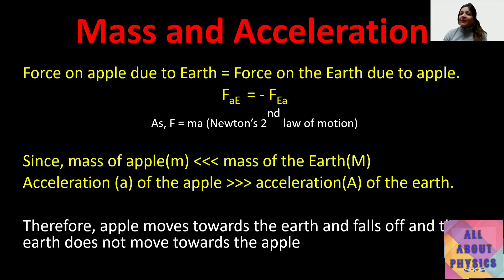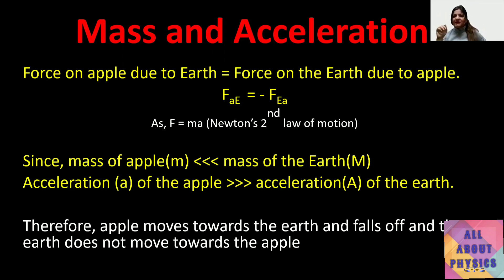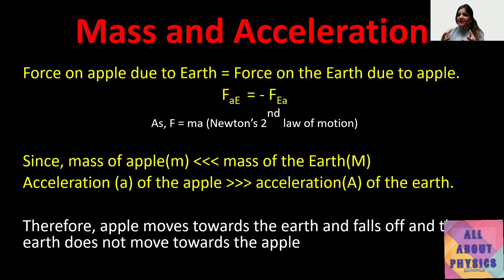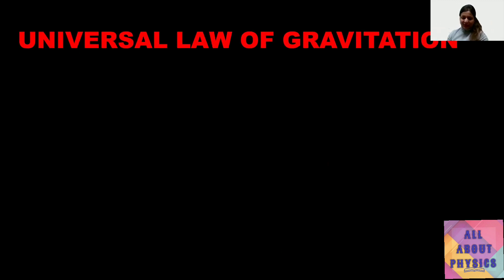The same concept applies in the Earth-Sun system. Mass of Earth is of the order of 6 × 10²⁴ kg, while mass of the Sun is approximately 2 × 10³⁰ kg — Earth is much lighter than the Sun. Because Earth's mass is less, it experiences more acceleration, and this is why Earth revolves around the Sun. Based on these observations, Newton proposed his law of gravitation, also called the Universal Law of Gravitation.